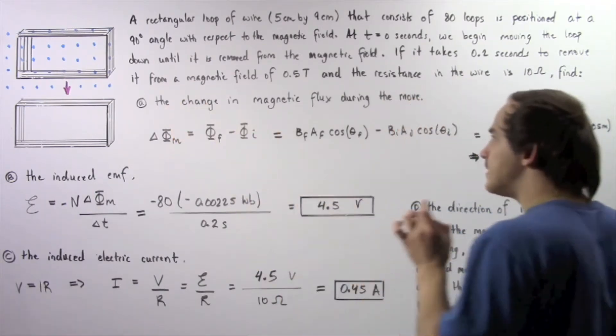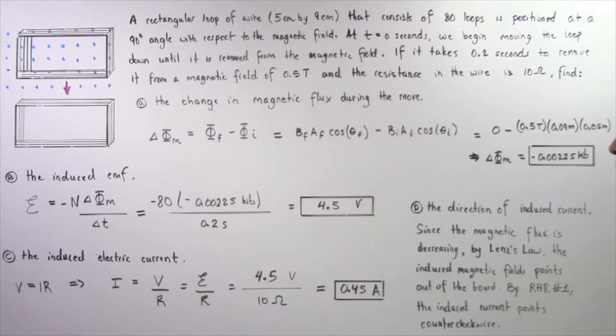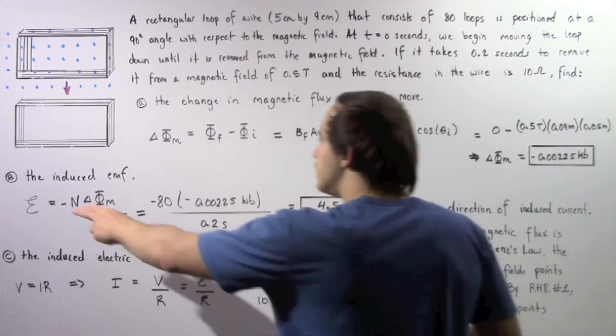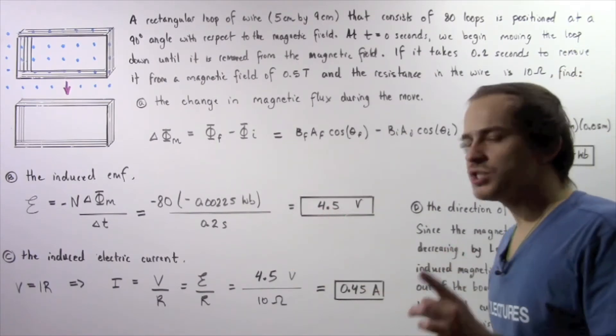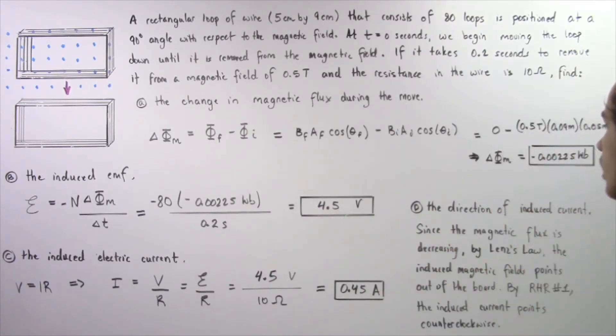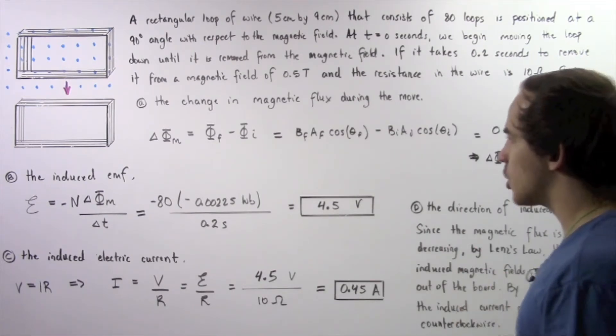In part A, find the change in magnetic flux during our move. In part B, find the induced EMF. In part C, find the induced electric current. And in part D, find the direction of our induced electric current.